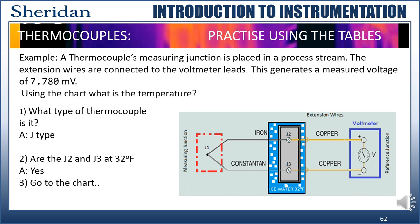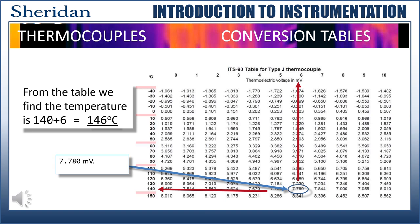Here's our first example. A thermocouple's measuring junction is placed in the process stream. The extension wires are extended to the voltmeter leads. This generates a measured voltage of 7.78 millivolts. Using the charts, what is the temperature? Well, before we go there, we have to ask ourselves a couple of questions. First of all, what is a type of thermocouple? Well, since they're using iron and constantan, that would make it a J-type. Number two, is the J2 and J3 junctions at 32 degrees Fahrenheit or zero Celsius? Well, they're in an ice bath, so yes. So now we can go to the chart. Scouring the chart, we find 7.789. And if I look and find its location, it's in the sixth column. And I shoot across to my left, and it's 140. So 140 plus 6 gives us a temperature of 146 degrees Celsius.